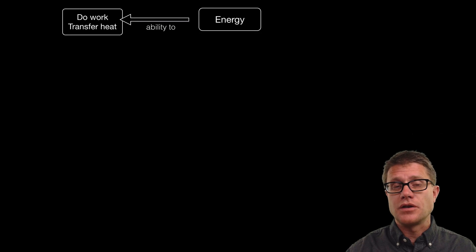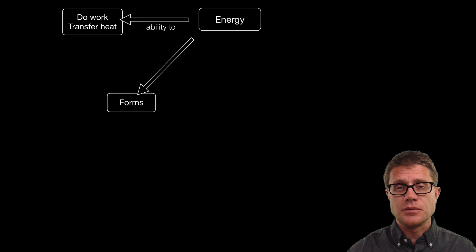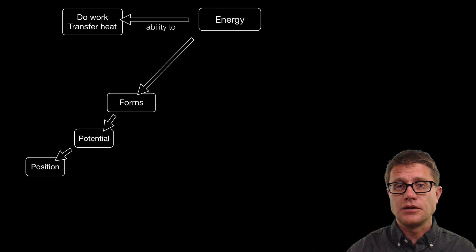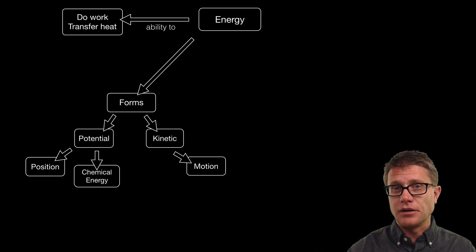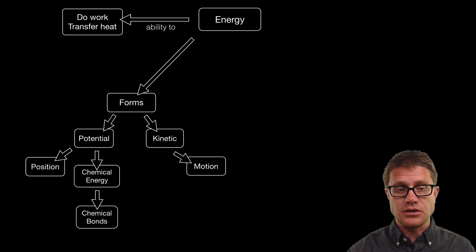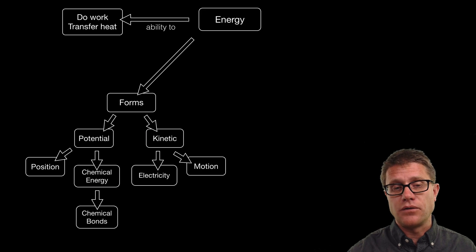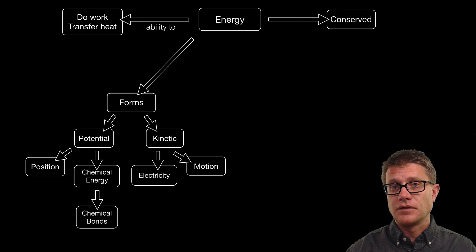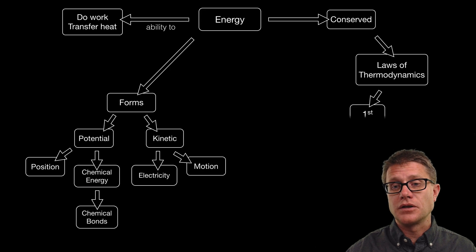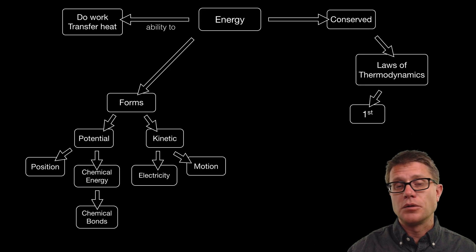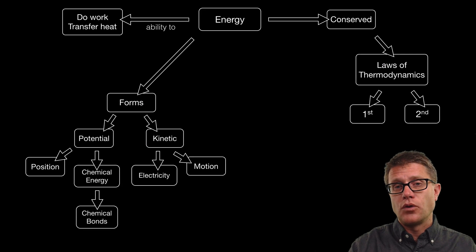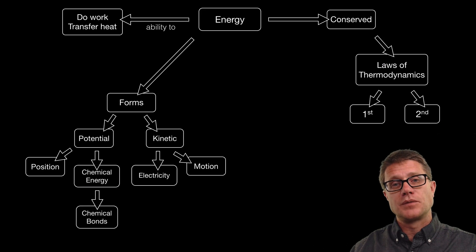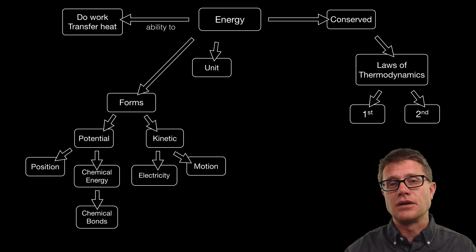Energy is the ability to do work or transfer heat. It comes in two forms: potential energy, which is due to position, and kinetic energy, which is due to motion. Chemical energy, like energy in a fuel, is potential energy in the bonds of the chemical. Electricity is actually a form of kinetic energy. Energy is conserved. It can neither be created nor destroyed. That is the first law of thermodynamics. The second law says that as we convert energy from one form to another, we lose energy that eventually becomes heat and increases the randomness or entropy of the universe.